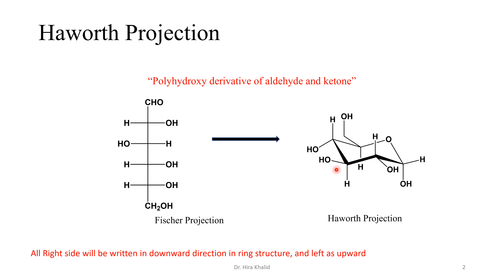Another terminology: downward and upward is also mentioned as the axial and equatorial position. In the Fisher projection, groups on the right side you write downward in the ring structure, and the groups on the left side you write in the upward position.